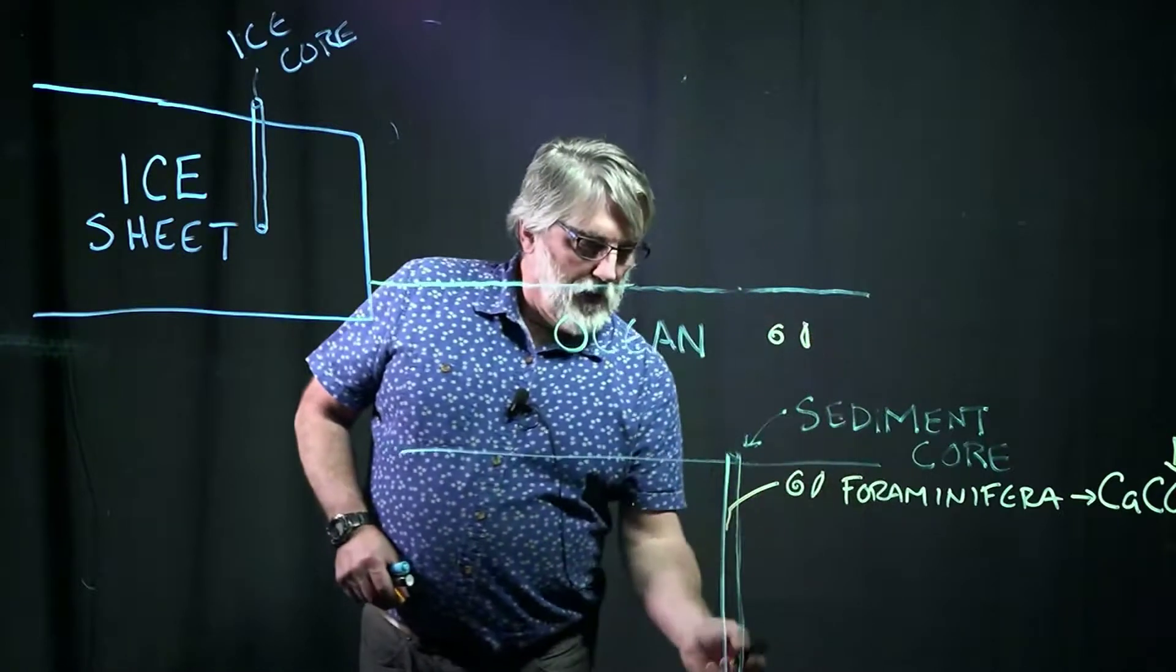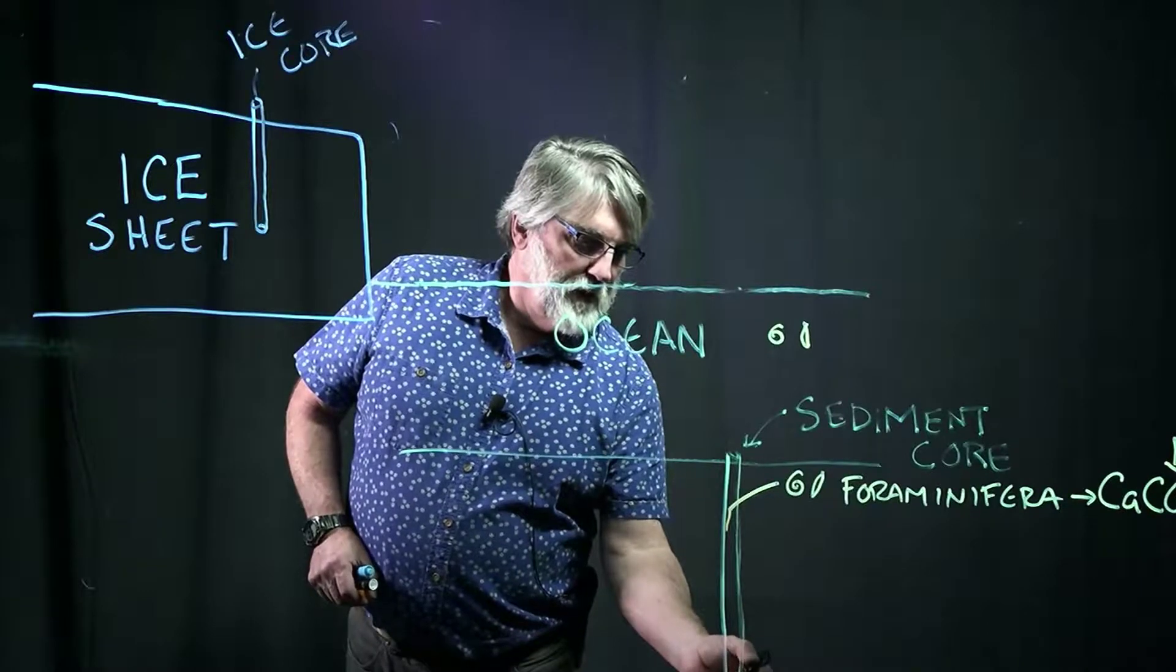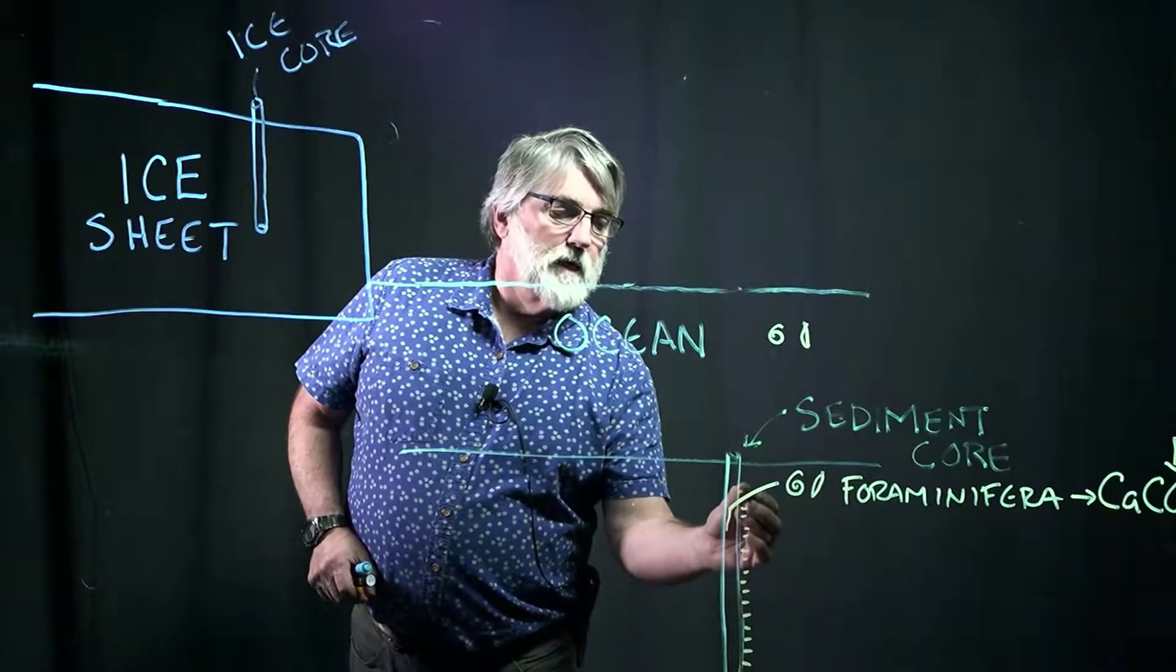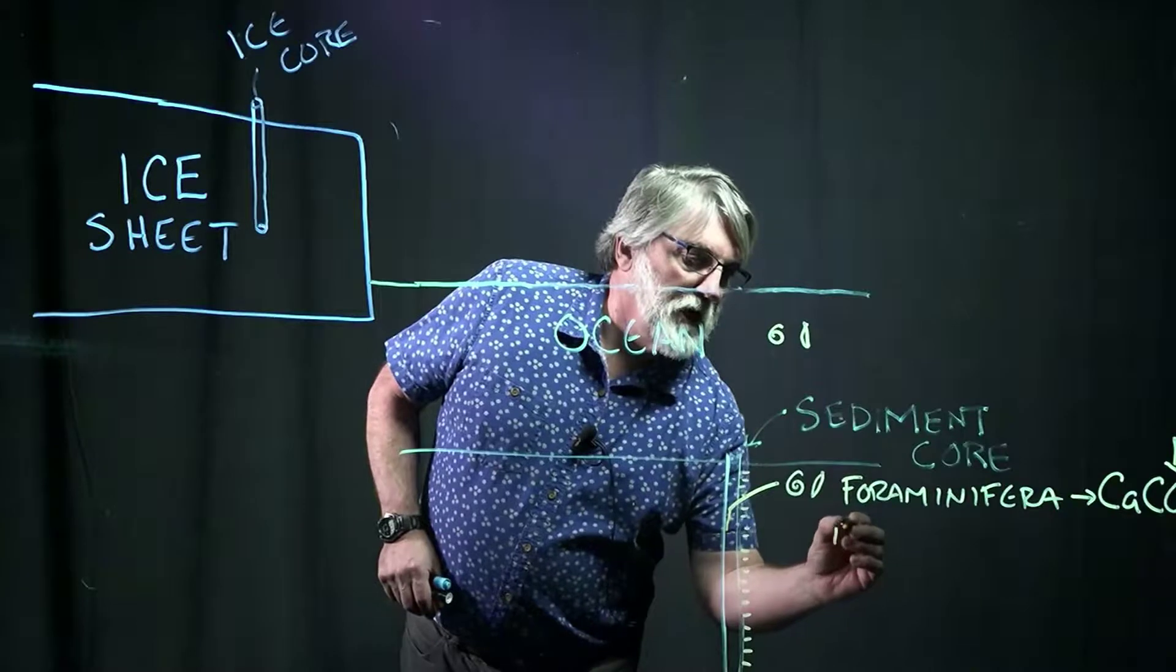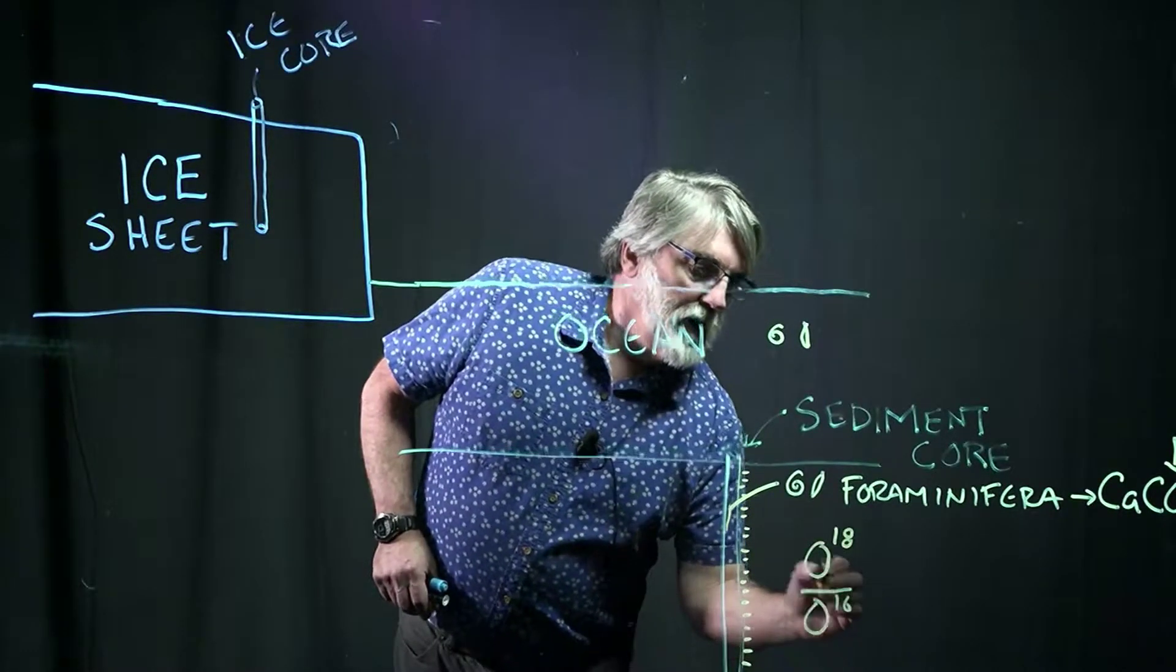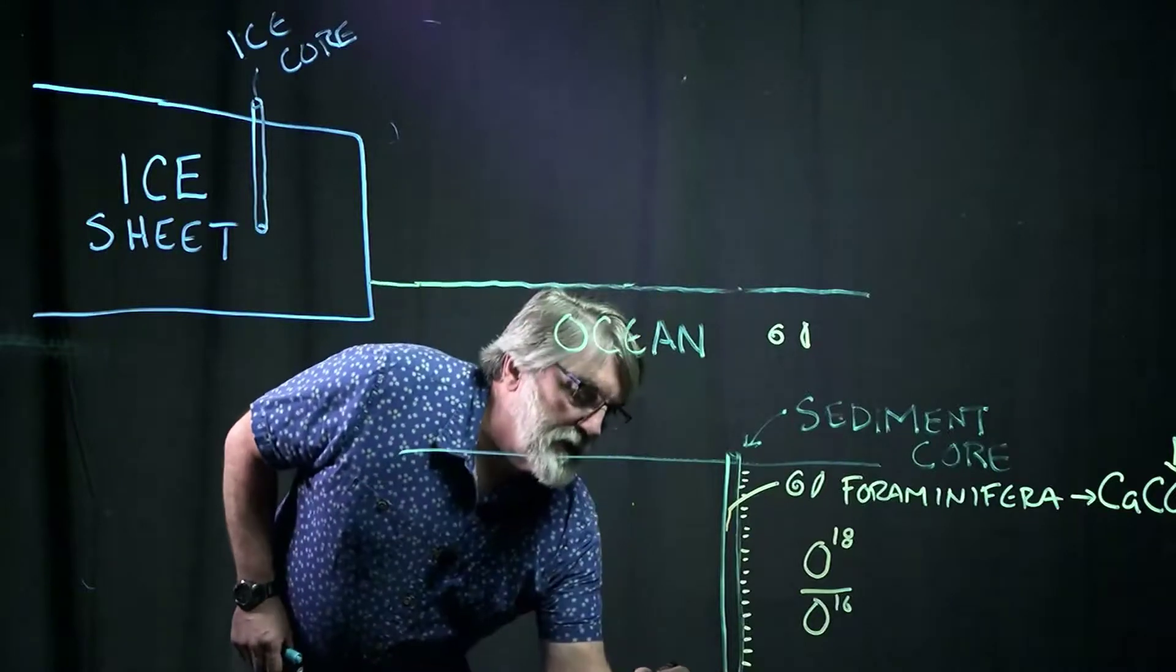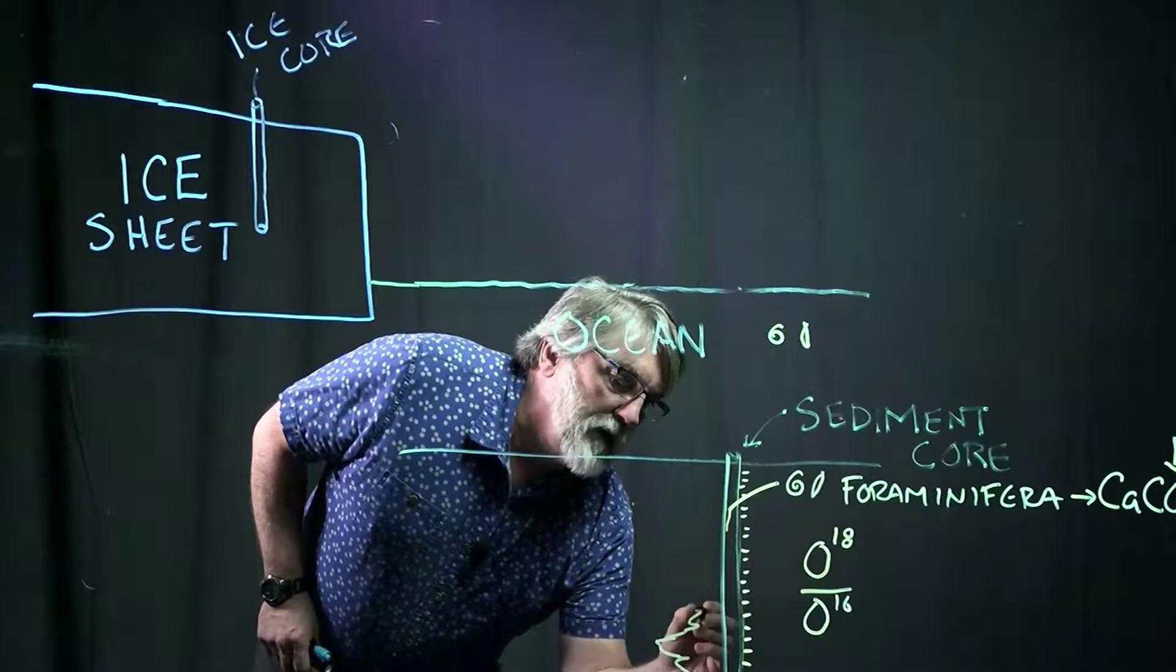So if we can go through this core and pull out forams going up through the core and we know their ages, we can put these little forams in what's called a mass spectrometer, and we can measure the ratio of O18 to O16 in each of those little samples going up through the core.